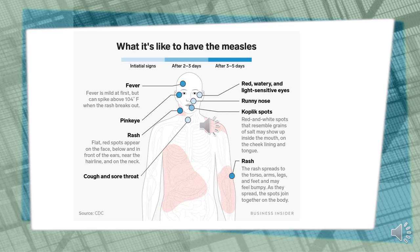Then, after 3 to 5 days, measles patients develop a red rash of raised red spots. The rash usually begins with flat red spots that appear on the face, below and in front of the ear, near the hairline, and on the neck. Then it spreads down to the torso, arms, legs, and feet. The spots may feel bumpy and generally start joining together as they spread across the body. This is the phase of illness when a fever can run dangerously high — over 104 degrees Fahrenheit.